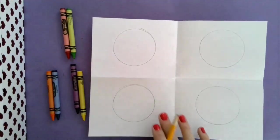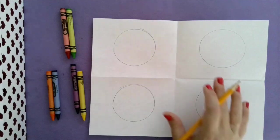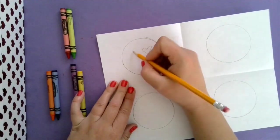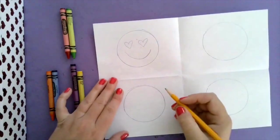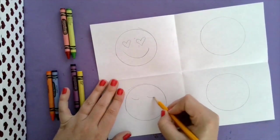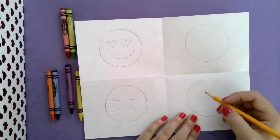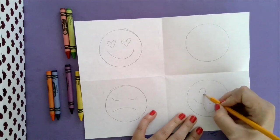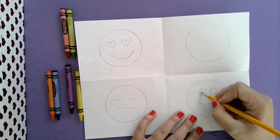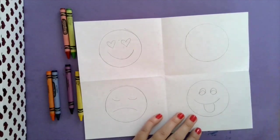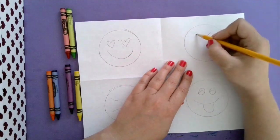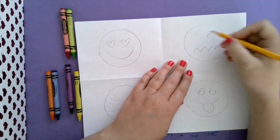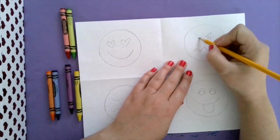Once you have all four of your circles you are going to draw your emoji faces. I think I want this one to be like a heart eye emoji. So happy. This one I think is going to be a sad emoji. Maybe this one will be a silly emoji with its tongue sticking out. And this one is going to be a mad emoji. A little mad eyes.